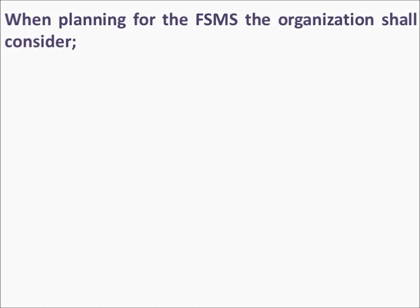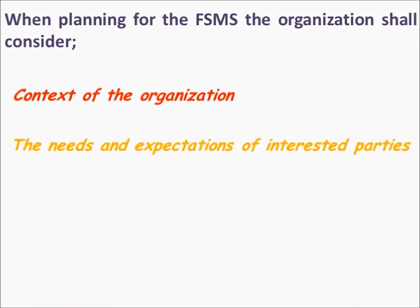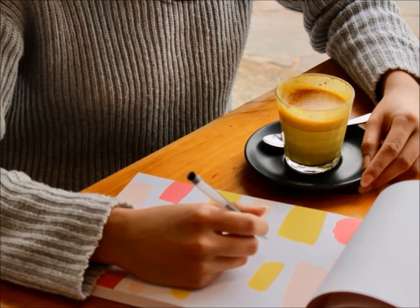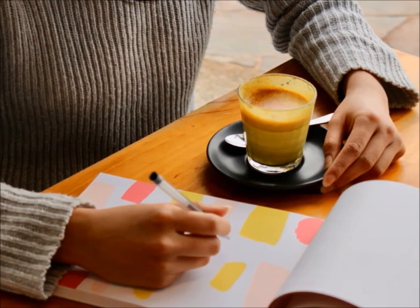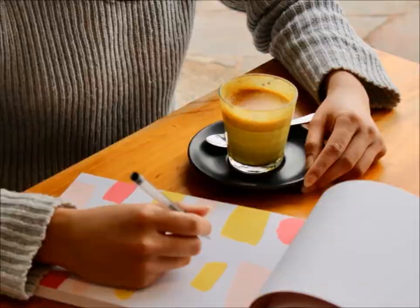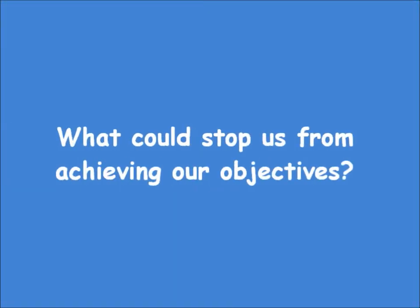When planning for the FSMS, the organization shall consider the context of the organization, the needs and expectations of interested parties, and the scope of the food safety management system. You are looking to answer the following questions: What are we trying to achieve? What could stop us from achieving our objectives?